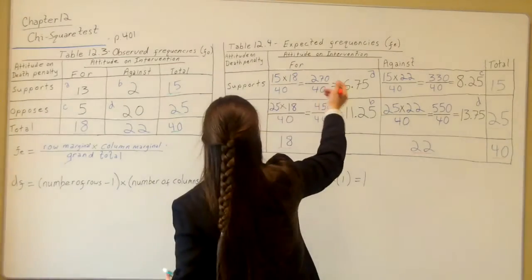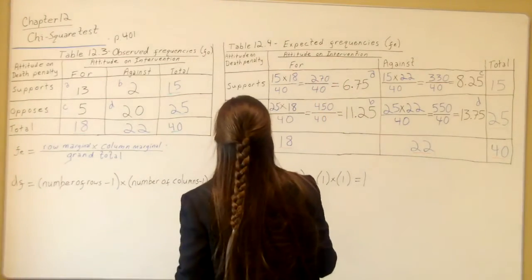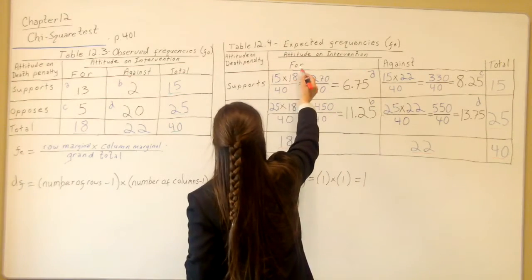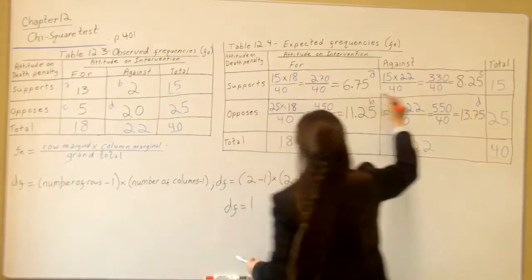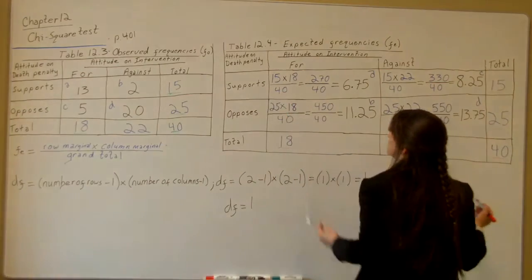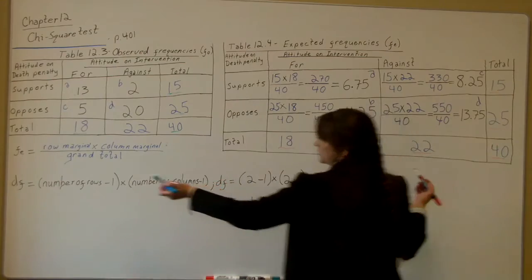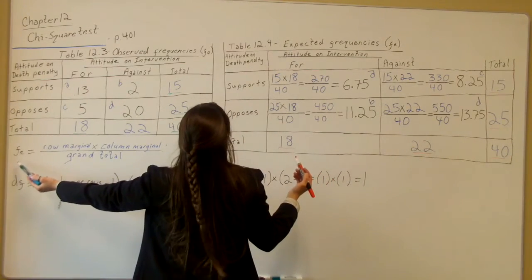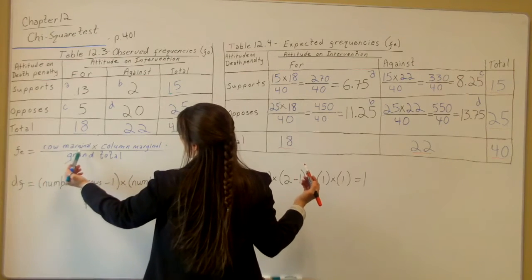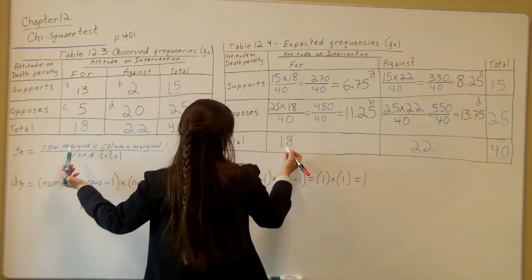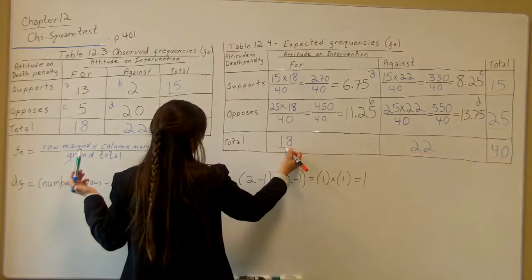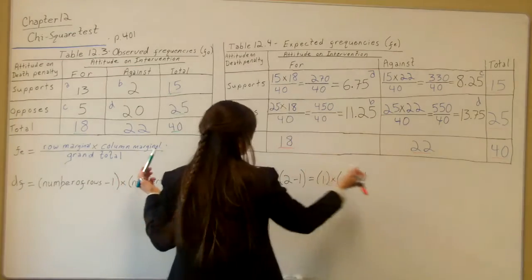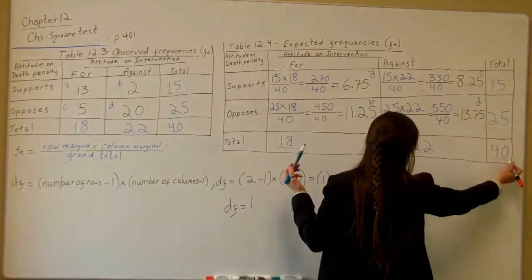So now let's go back to the expected frequencies as far as how to calculate this. So what I did for the first box, the way I worked it is I did this row. I worked the first row, which is supports. Do you see the equation over here, the formula? You have the expected frequencies equals the row marginal. What in the world they're saying? They're saying your row marginal total times your column marginal total over your grand total.